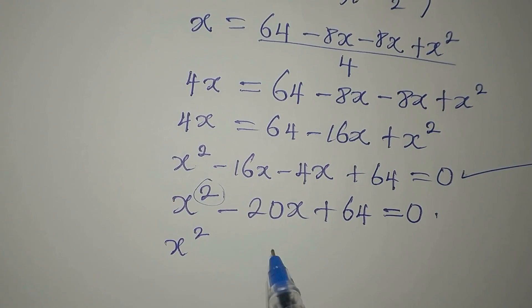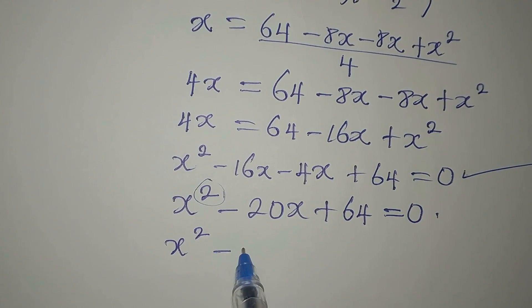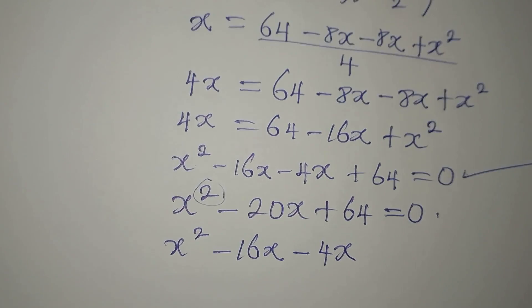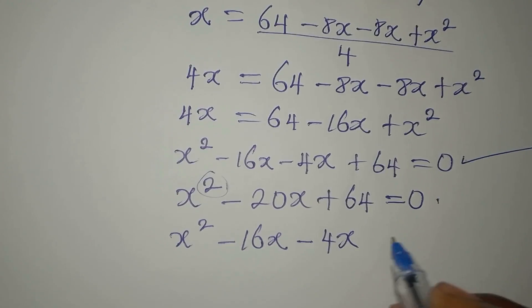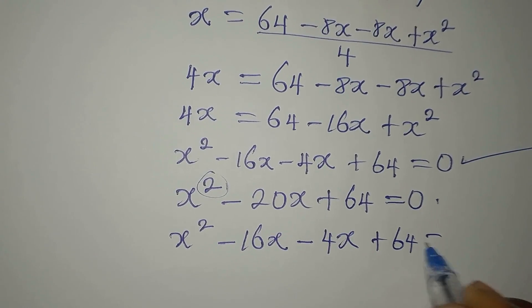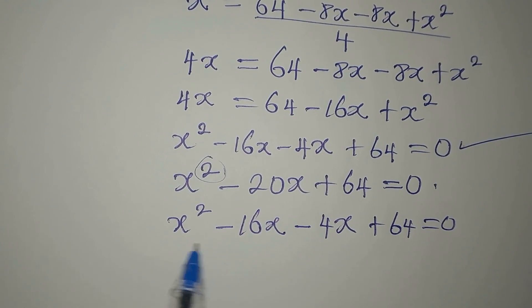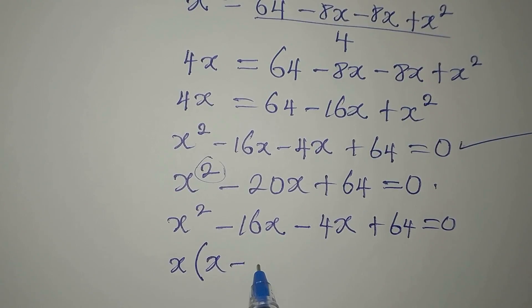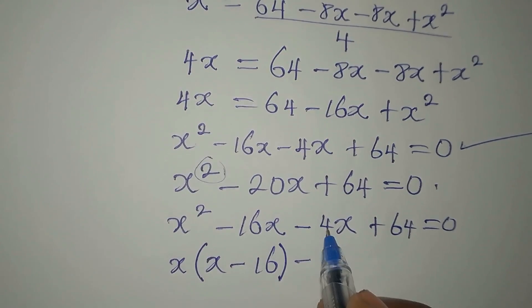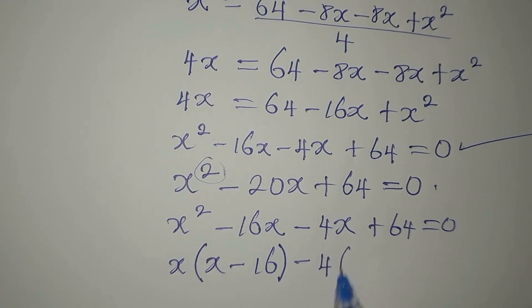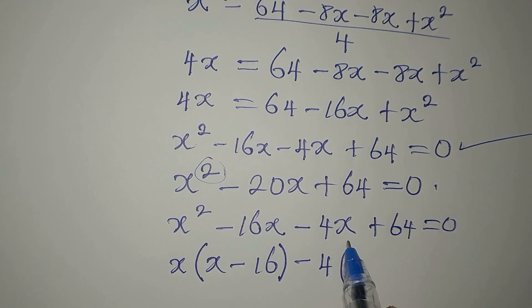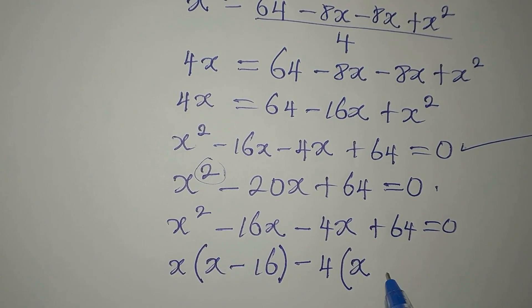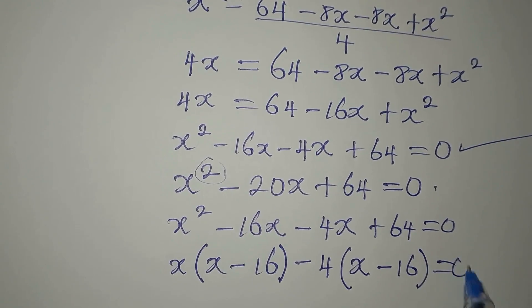We have x squared. In place of this minus 20, I can write minus 16x. Then I write another minus 4x. This is because minus 16x minus 4x is minus 20x. Then we have plus 64. Everything is equal to 0. We're going to factorize these two. What is common to them is x. Then minus here, 4 is here and 4 can go there. So 4 is a common factor. 4 divided by 4 is going to give us x. Then 64 divided by negative 4 will give us negative 16. So everything is equal to 0.